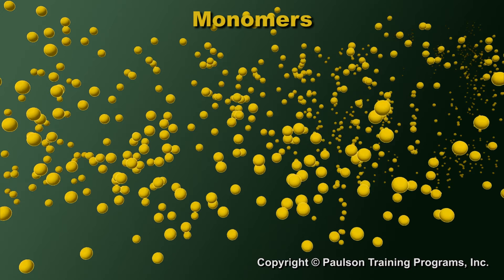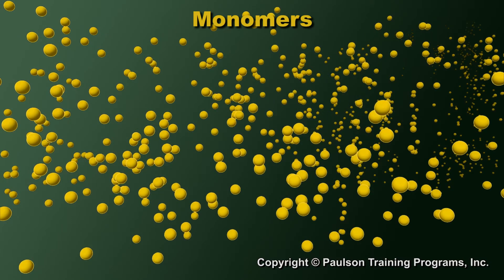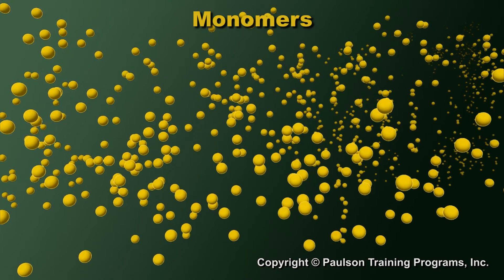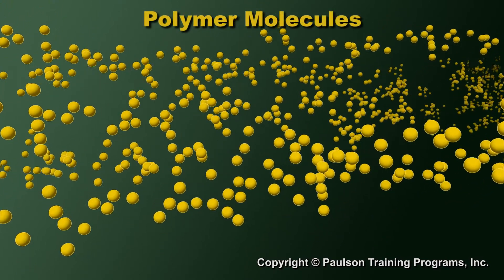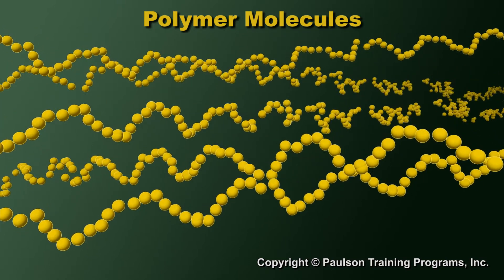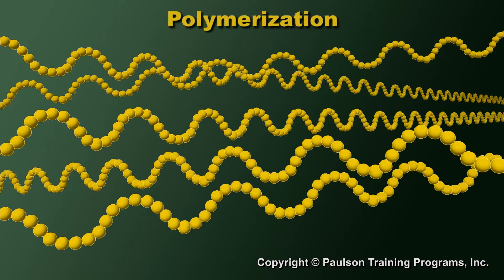To make a plastic, we start with small molecules called monomers. The monomer for polyethylene is ethylene. The monomer for polystyrene is styrene. The monomer units, or molecules, are combined to make the long molecules called polymer molecules. The process of making long molecules out of short ones is called polymerization.